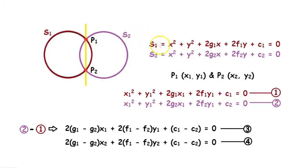The formula of S1 is x² + y² + 2g₁x + 2f₁y + c₁ = 0. And the formula of S2 is x² + y² + 2g₂x + 2f₂y + c₂ = 0.